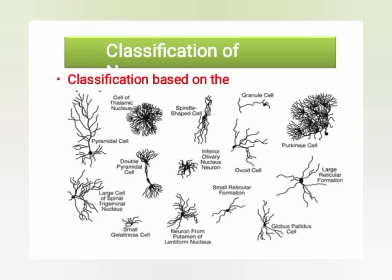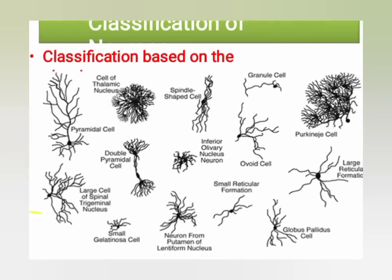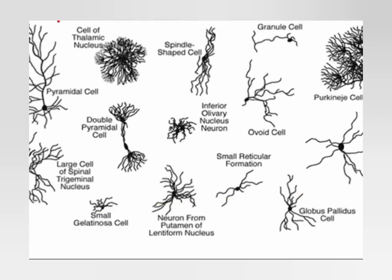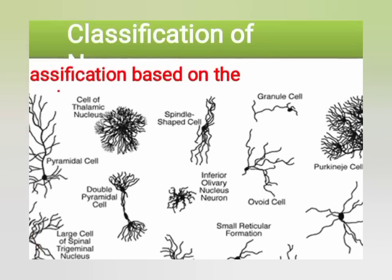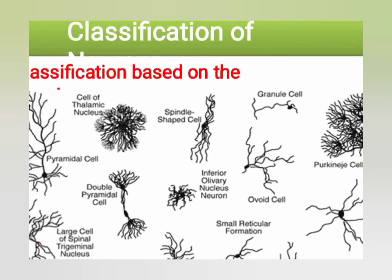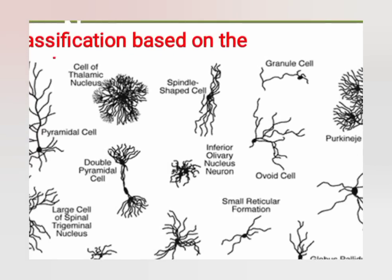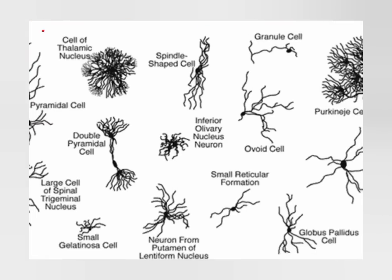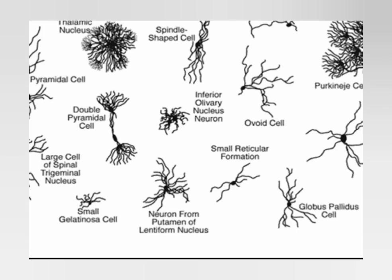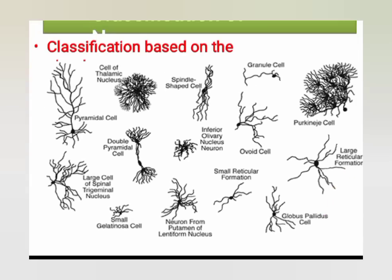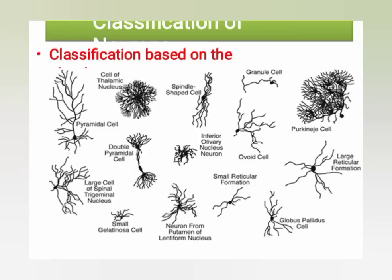Here are different cell types shown: basket cells, pyramidal cells, large spinal trigeminal nucleus cells, Purkinje cells, and large reticular formation cells. In this video we discussed the classification of neurons. Please like my video and subscribe to my channel.